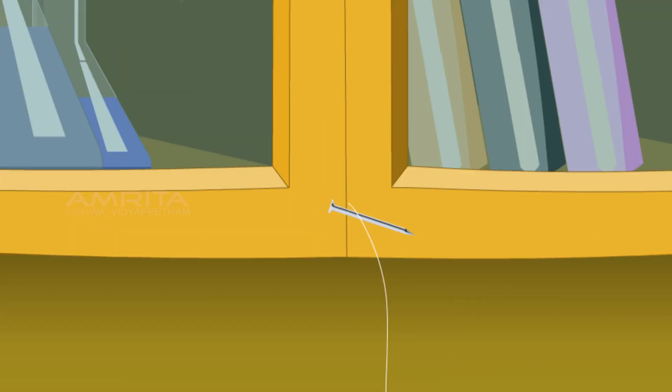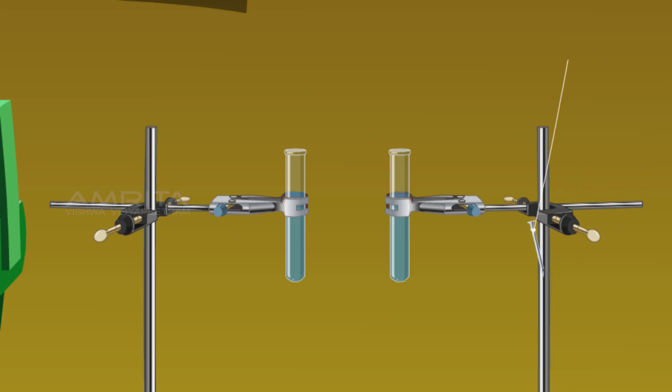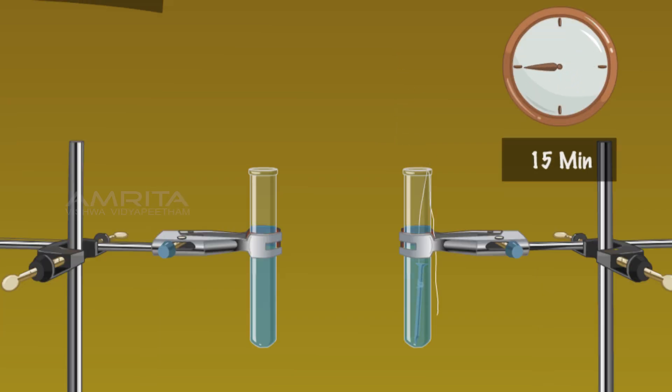Tie one nail with a thread. Immerse this into one of the test tubes containing copper sulphate solution. Keep the two test tubes undisturbed for about 15 minutes.